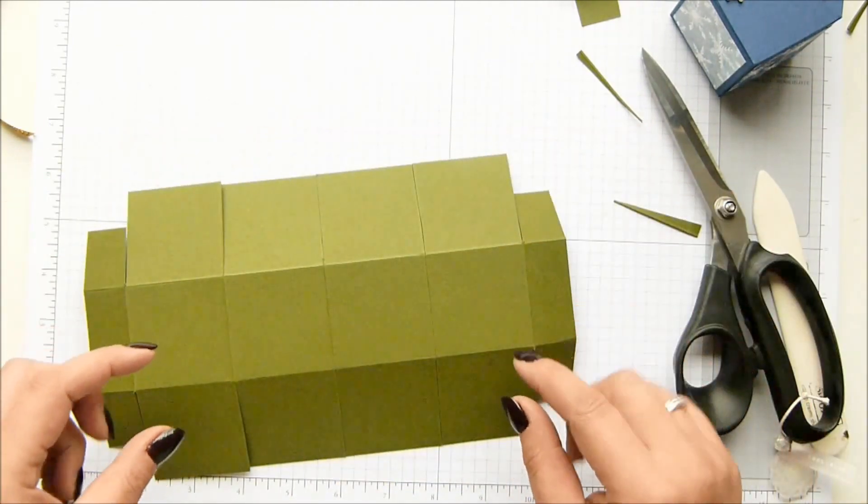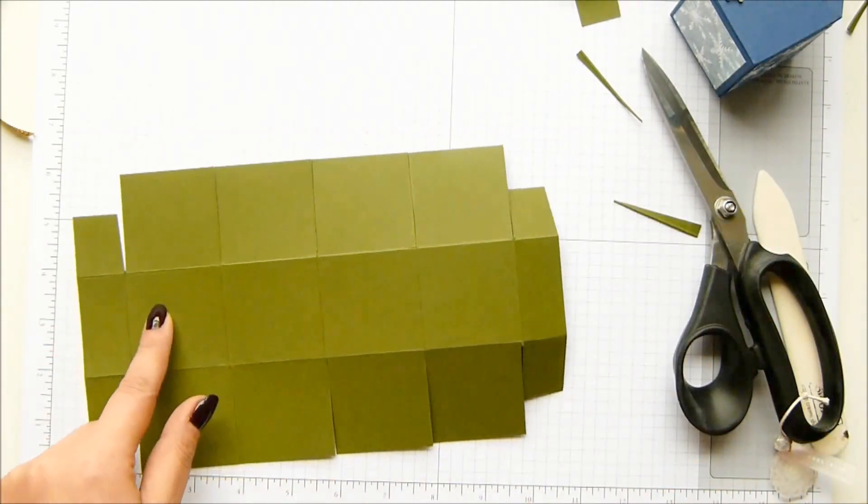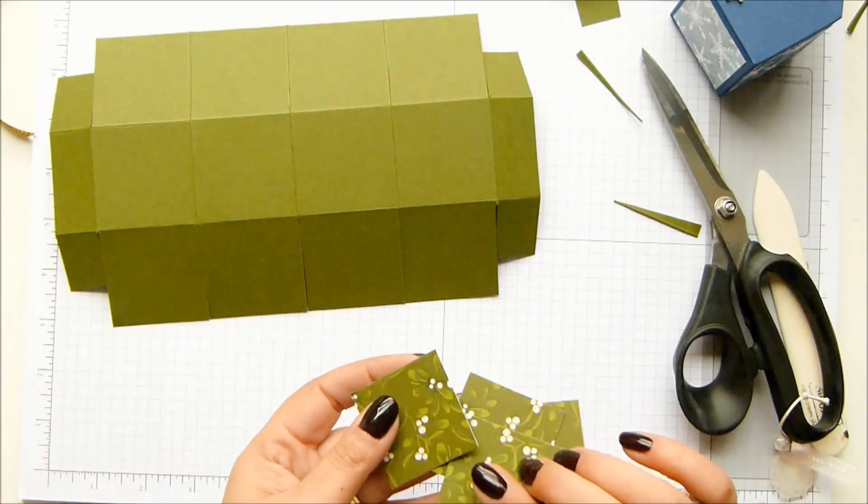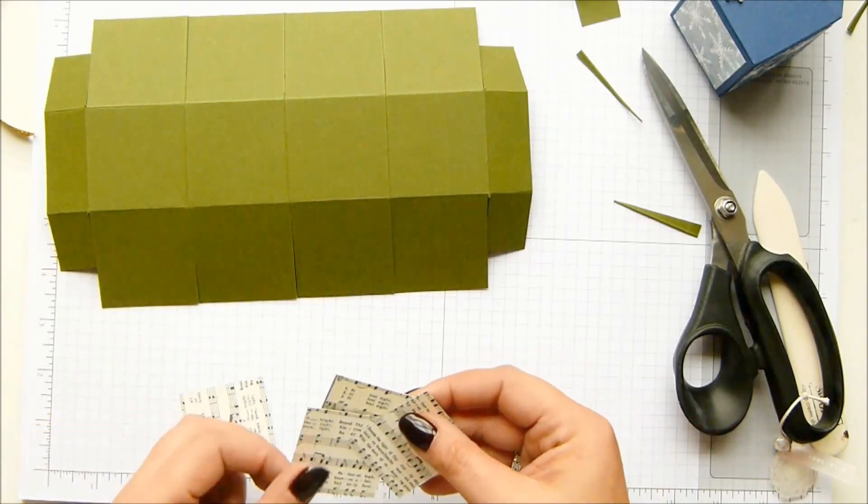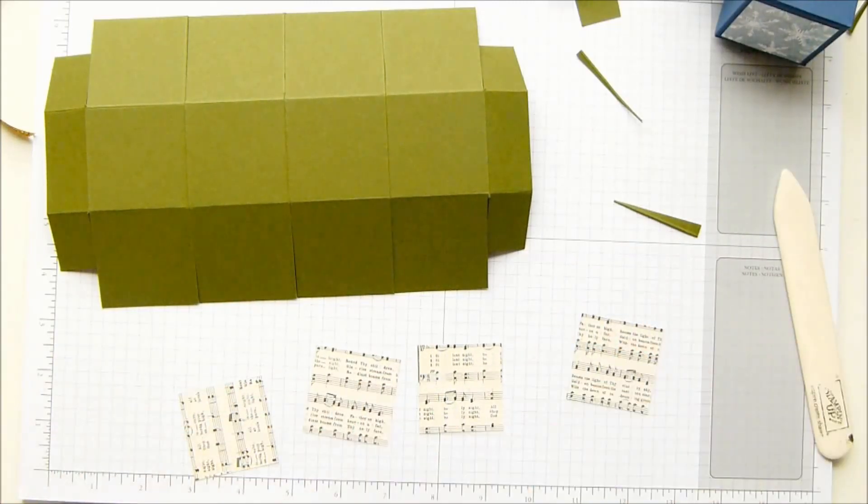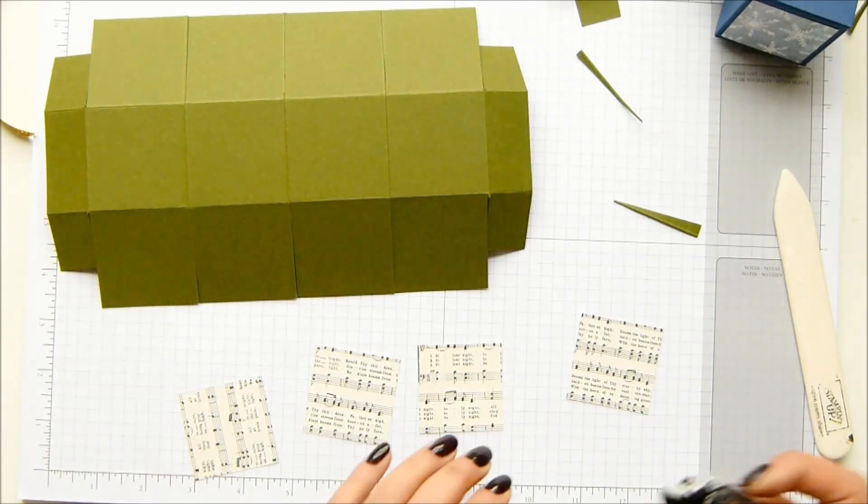So basically turn your box over and it's these four center squares. The DSP pattern as I said is the Home for Christmas, it's this lovely pretty one, and they measure one and three quarters by one and three quarter inches which is four and a half by four and a half centimeters and you need four of them.